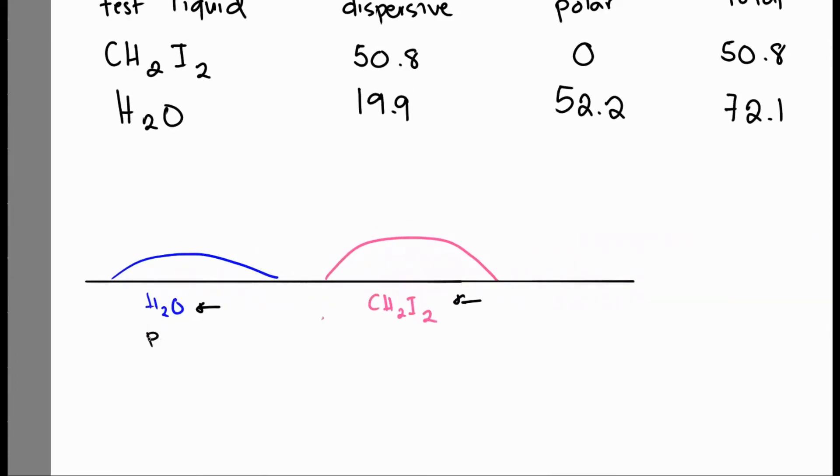Water is a polar liquid, while CH2I2 is usually a non-polar liquid. Whenever we do our contact angle measurement or surface energy determination using contact angle, we drop small amounts of liquid, usually around 5 microliters of liquid onto our surface, and it will form a droplet onto our surface like so.